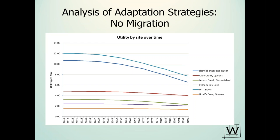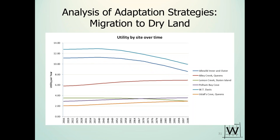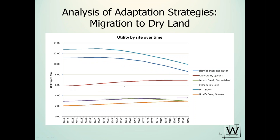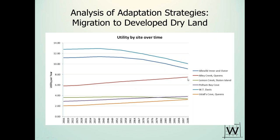Now let's look at what happens when you combine the decision support tool with the adaptation strategies — some very interesting results emerge. The base case shows the utility of existing marshes with no migration. When you add migration to dry land, there's quite a jump in utilities. For example, Alley Creek in Queens, which shows a steady decline in ecosystem services, actually shows the potential for an increase if marshes are allowed to migrate. Including migration of developed dry land shows only a very small incremental increase on top of undeveloped migration, varying from site to site depending on how much developed dry land exists.